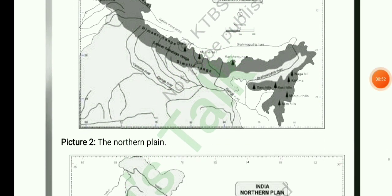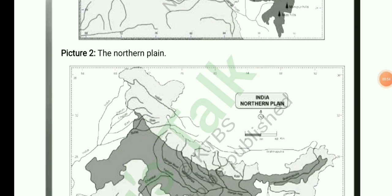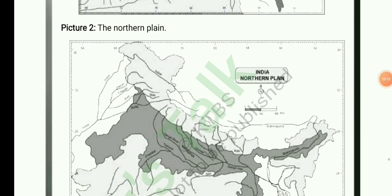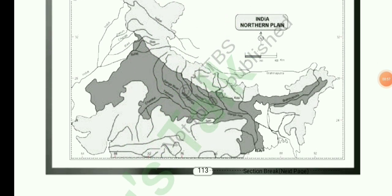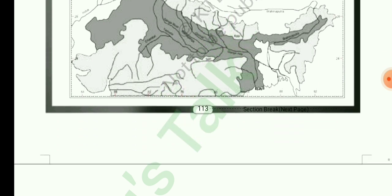Picture 2 is the Northern Plain. The Northern Plain lies between the Himalayas and the Peninsular Plateau of India. It is formed by the depositional work of 3 river systems: the Indus, Ganga, and Brahmaputra.